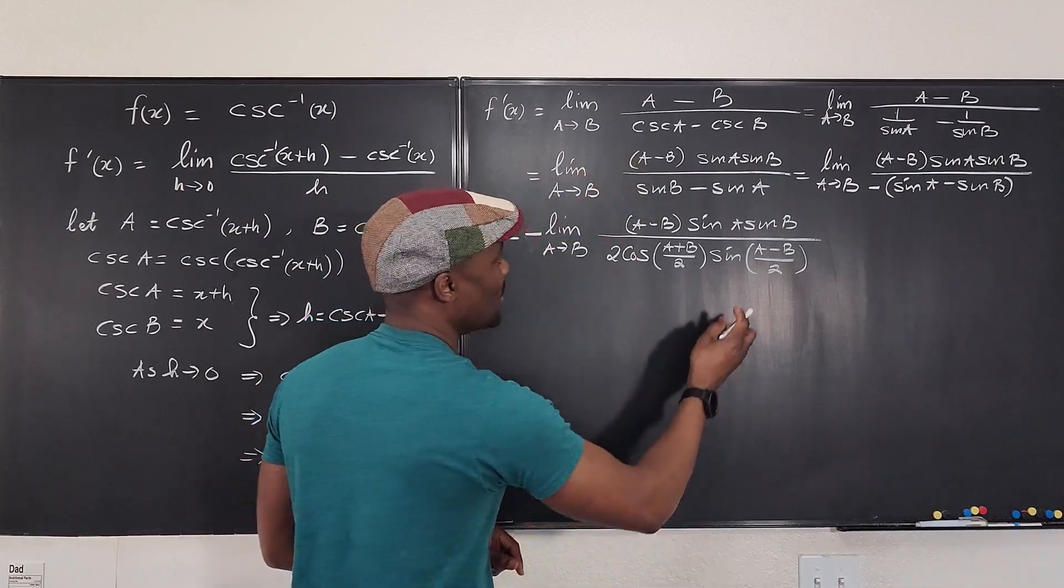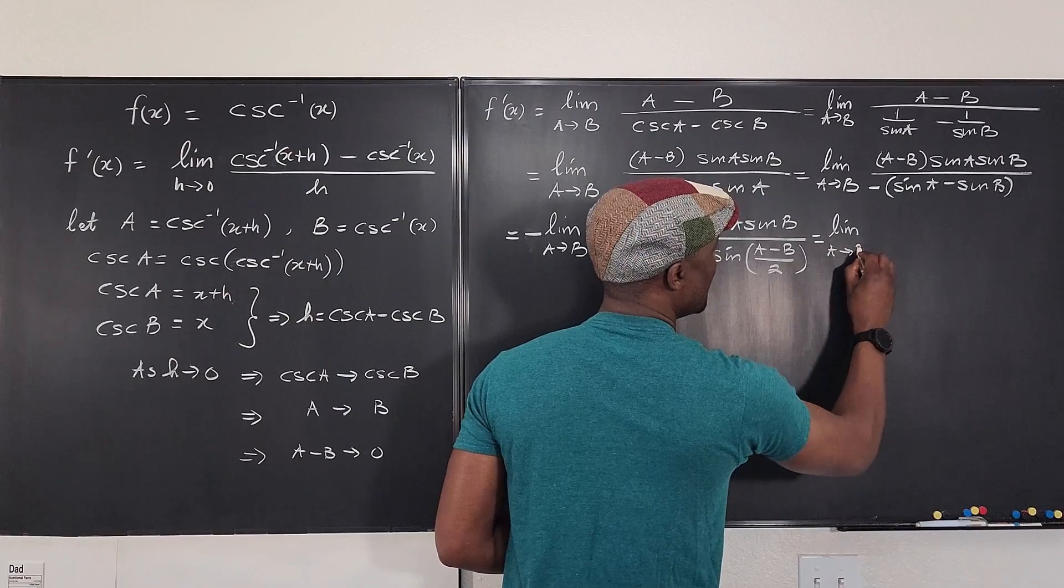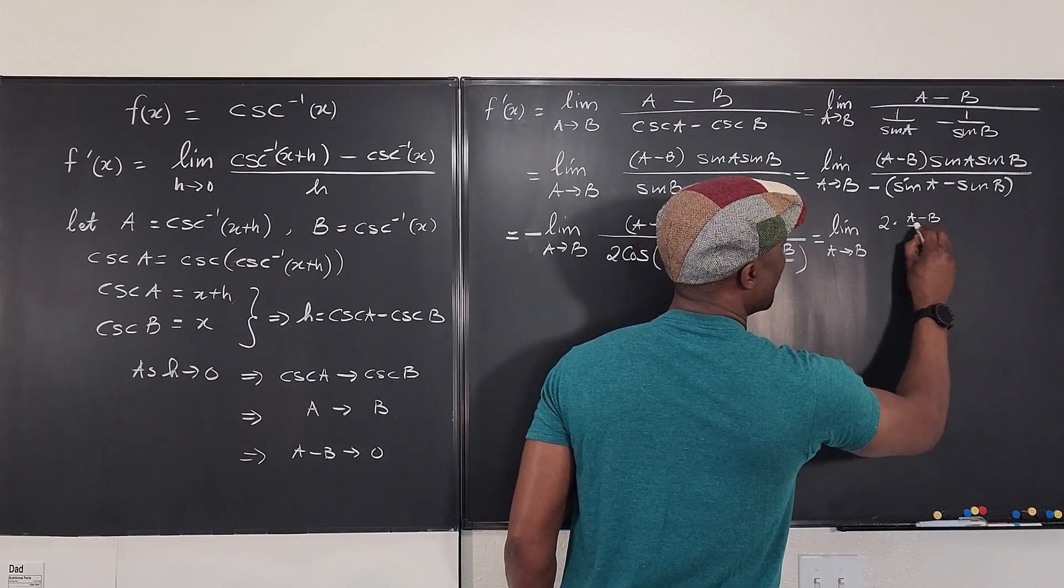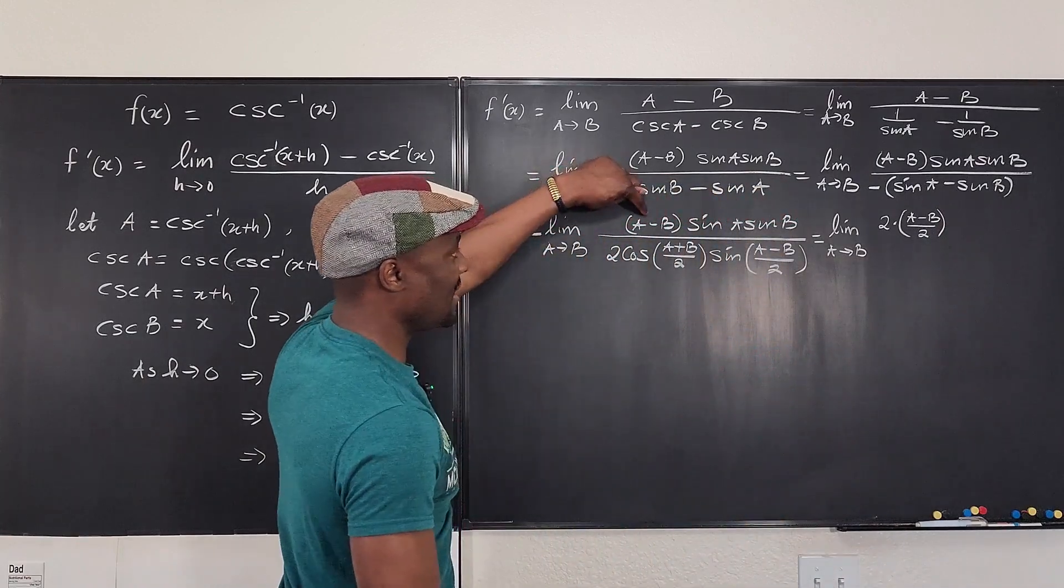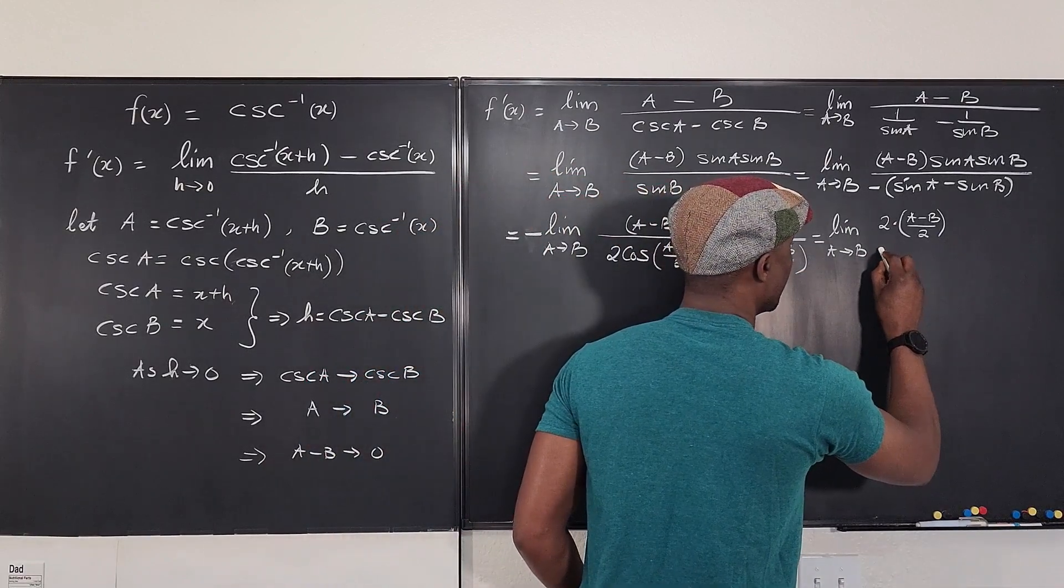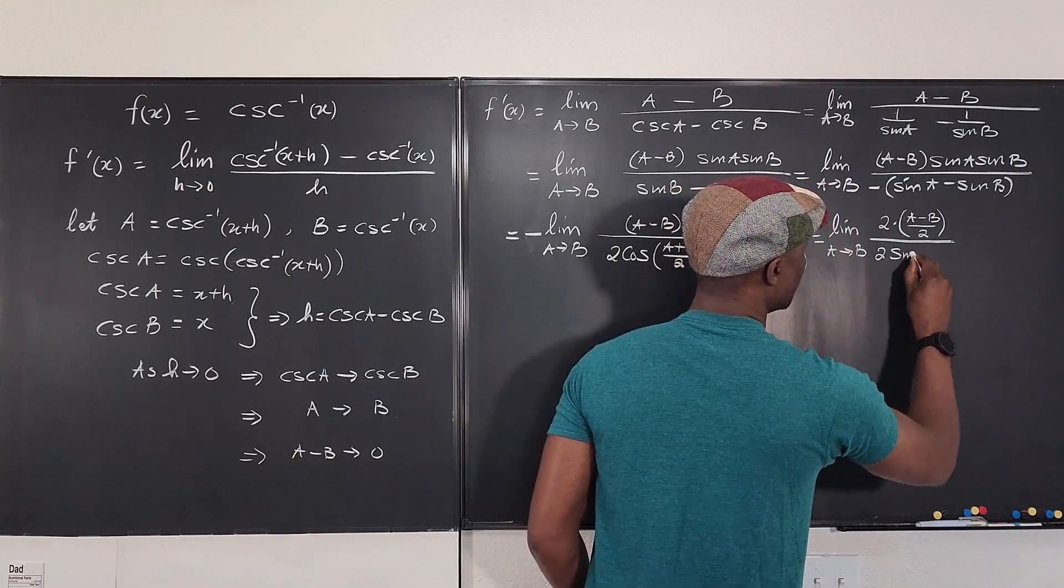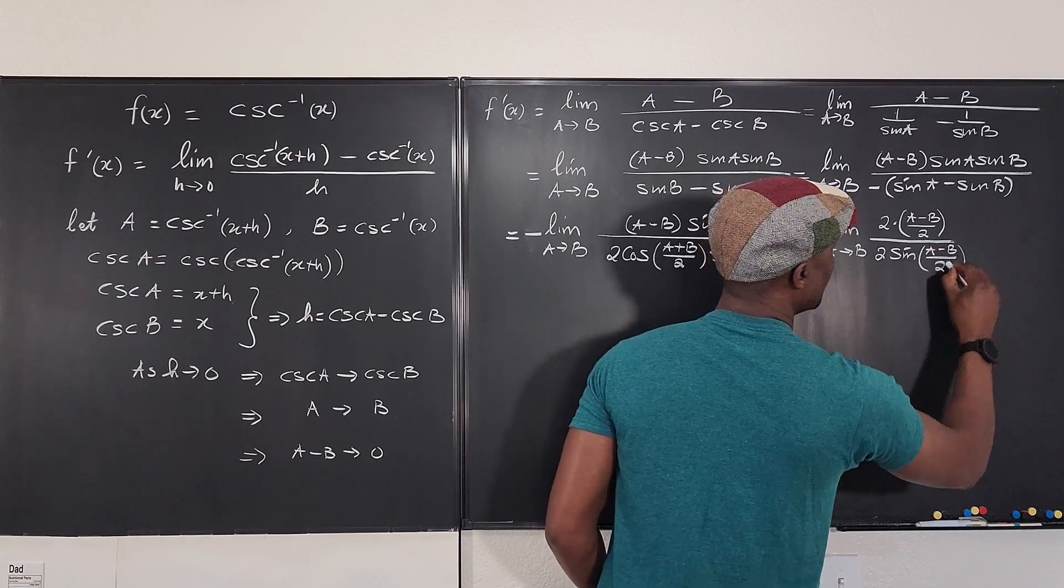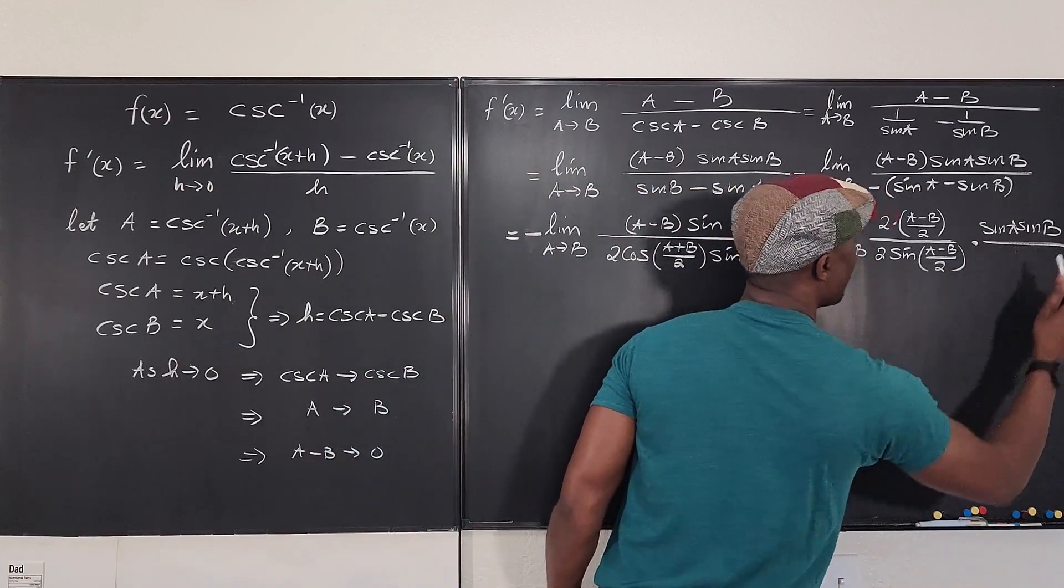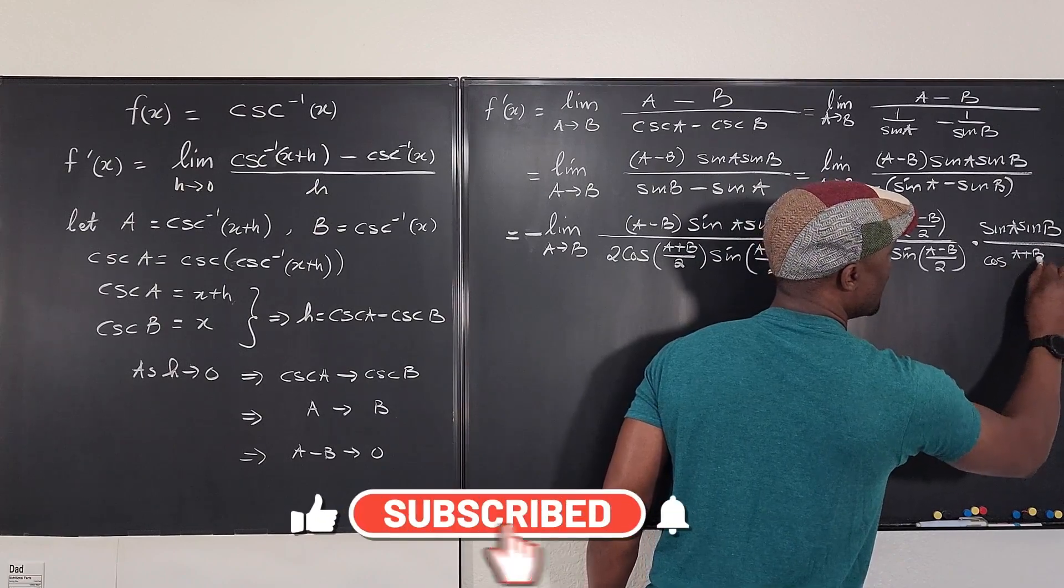But this has to look exactly as this. So what I'm going to do in one move is I'm going to divide this by 2. Maybe I should take one more step. So this is going to be equal to the limit as a goes to b of, this is going to be written as, watch this, 2 times a minus b over 2. Do you see that? This is still the same thing as this because this will cancel out. I still have my a minus b, but I'm going to place this under it directly. And this 2, I'm going to put it here too. And so that what I have is going to be sine a minus b over 2. And then I'm going to multiply by sine a sine b divided by what's the other part left? Cosine a plus b over 2.